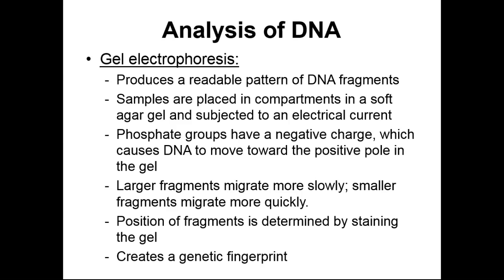Moving on, let's talk about gel electrophoresis. Gel electrophoresis is a way of separating small molecules based on their size, shape, and electric charge. When you think of DNA fingerprinting and you look at a picture of many small lines on a screen, you're probably looking at a picture of a gel. All DNA has an electric charge to it. Phosphate groups generally have a negative 3 charge, so DNA with a phosphate-sugar backbone is going to have an overall negative charge.